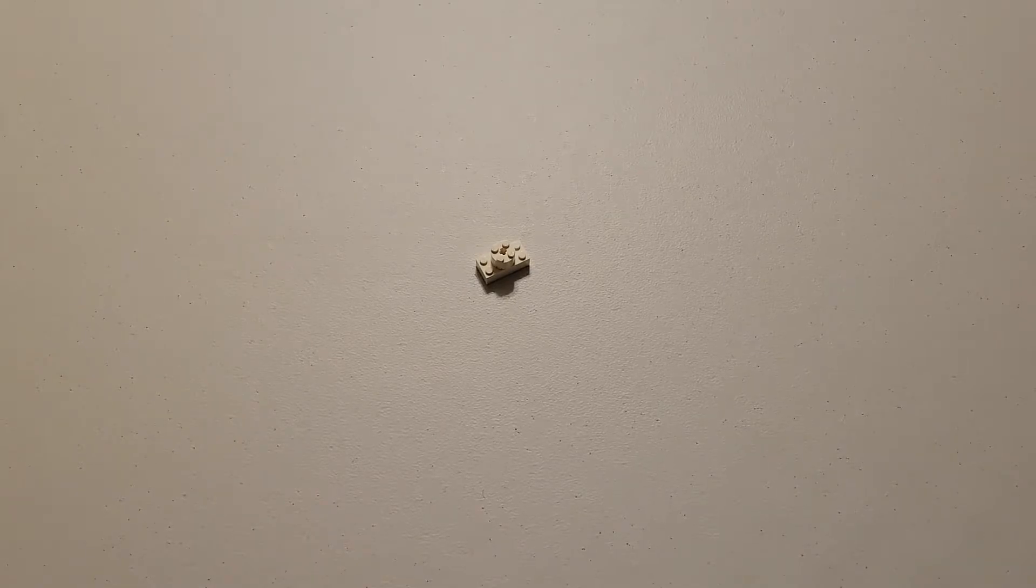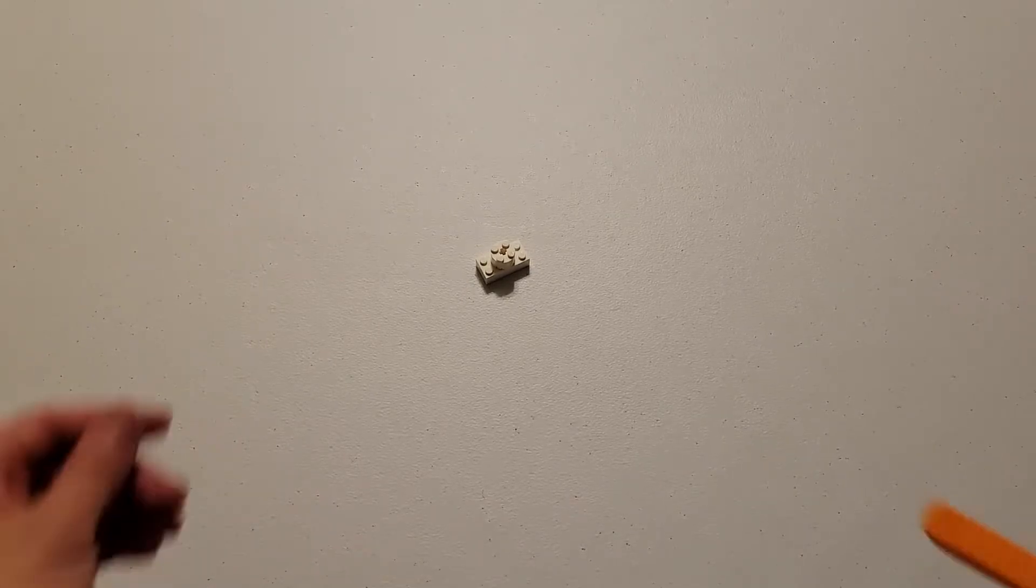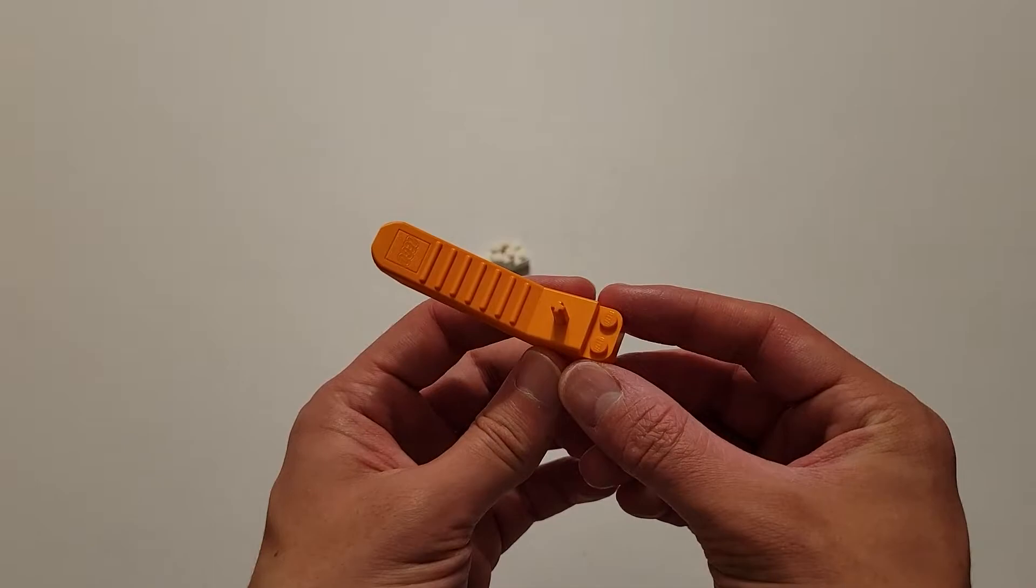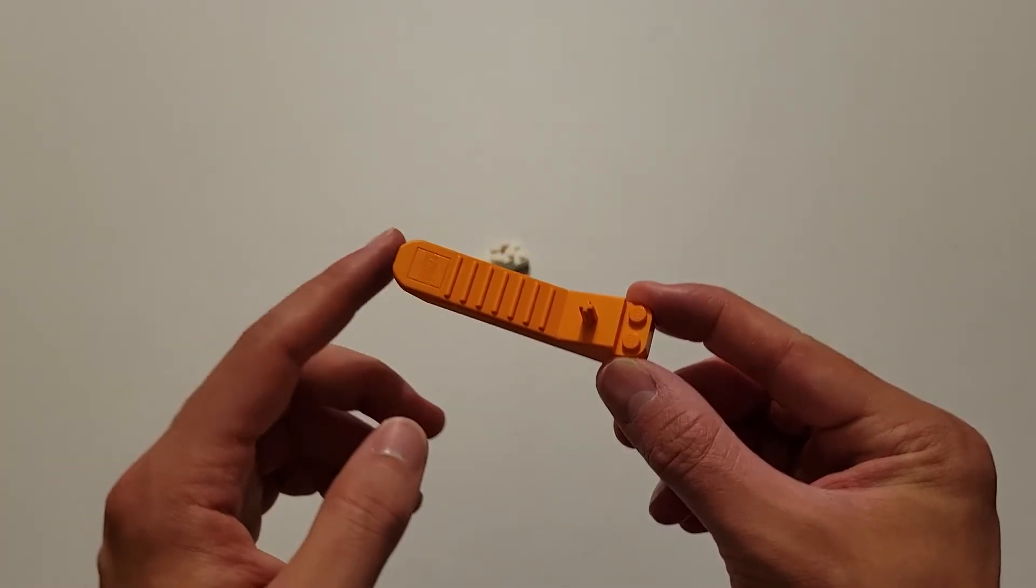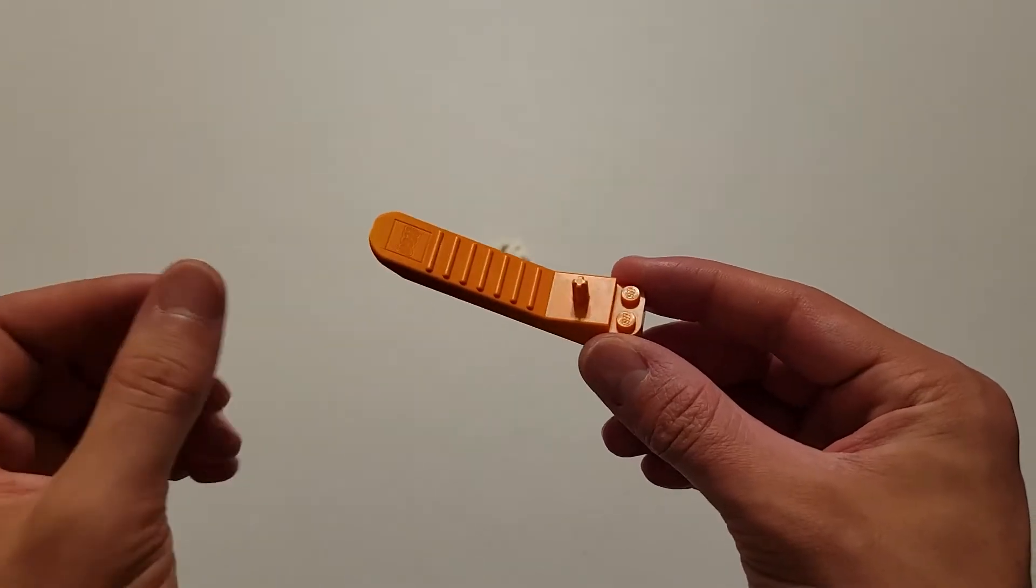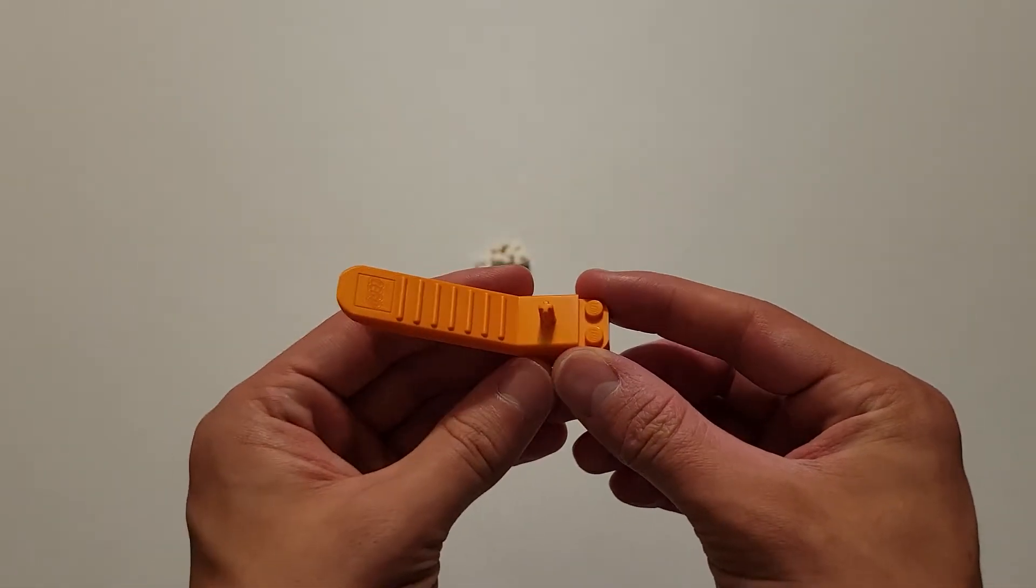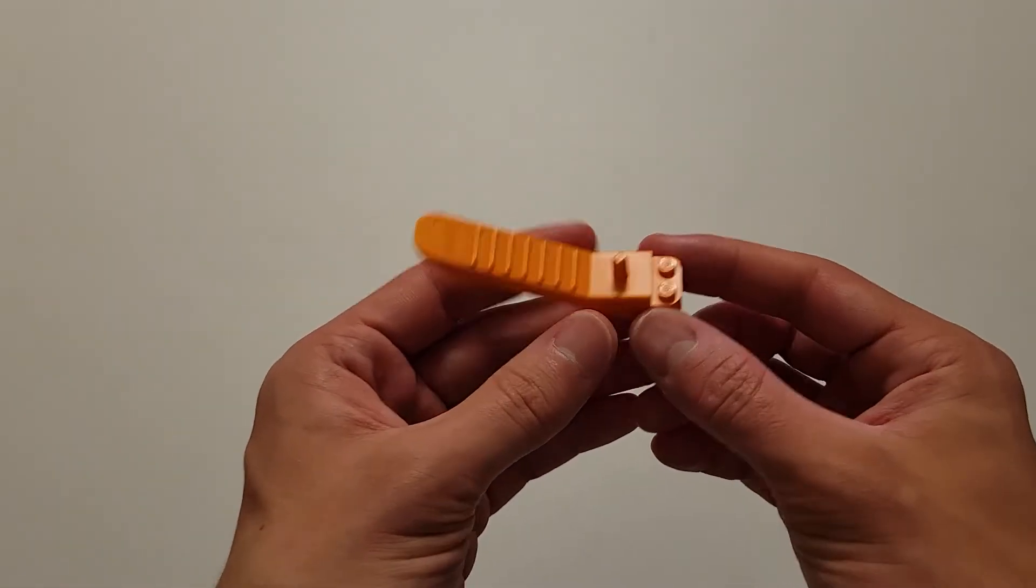Now before we end this video, there is one more thing that I would like to point out. And that is this orange piece that was also contained in bag 14. And for those of you who don't know, this is a tool to help you build. And essentially what you can do is you can use this to help get pieces apart if you make a mistake.